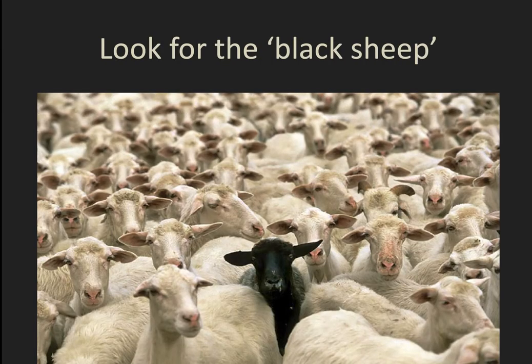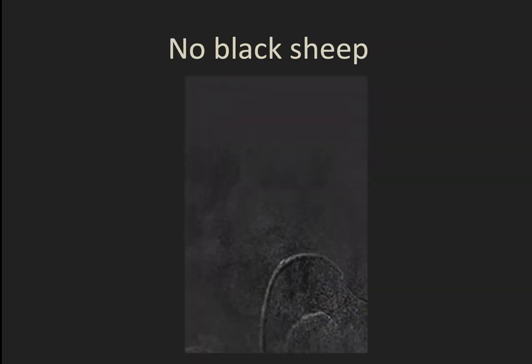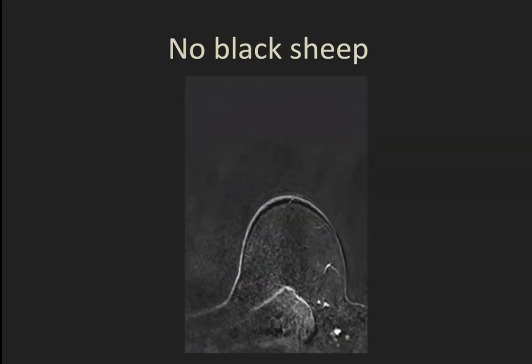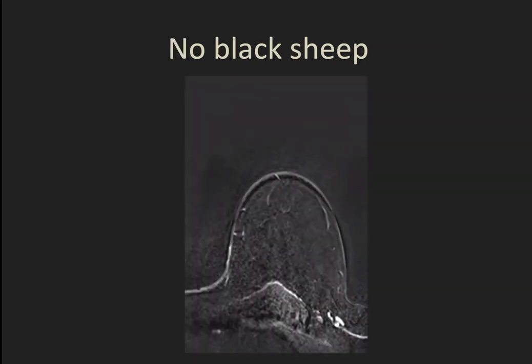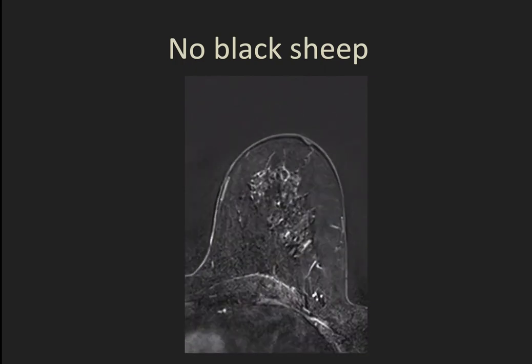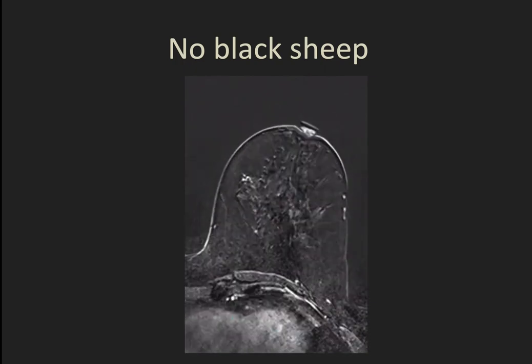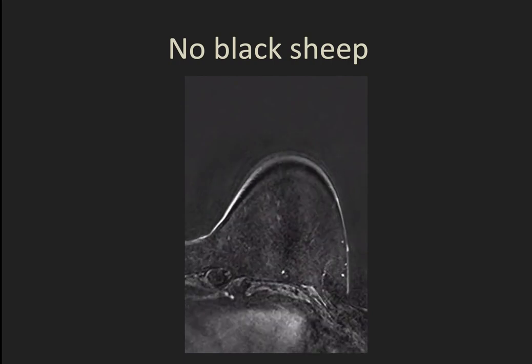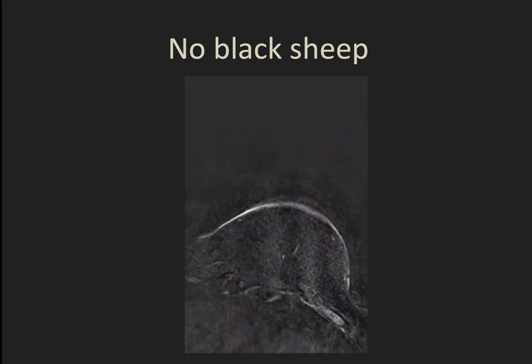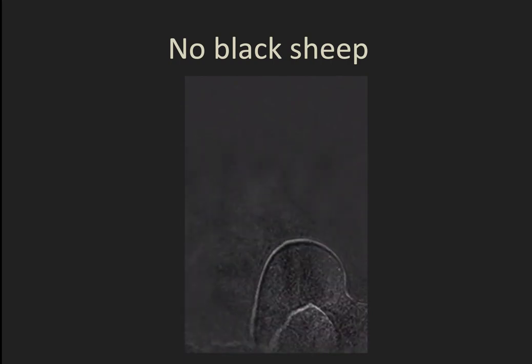When I teach my residents, I say you're looking for the black sheep amongst the flock — the one that stands out. This patient has lymph nodes visible in the bottom right and probably moderate BPE, but there's no black sheep. All these foci look exactly the same.